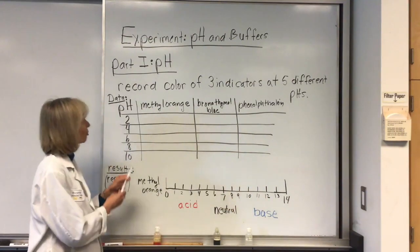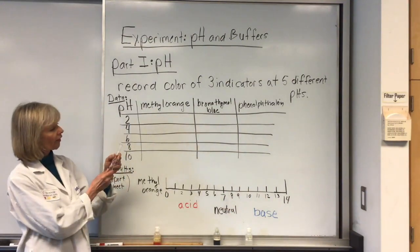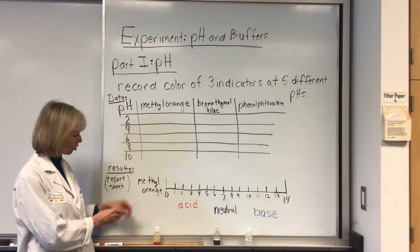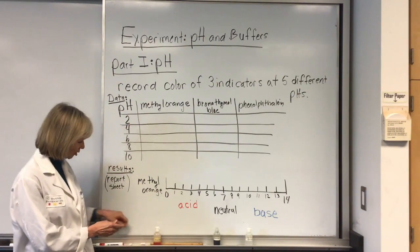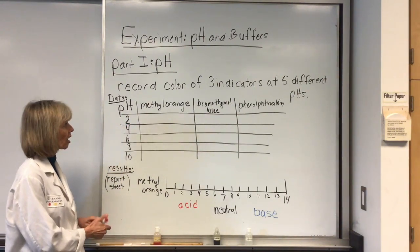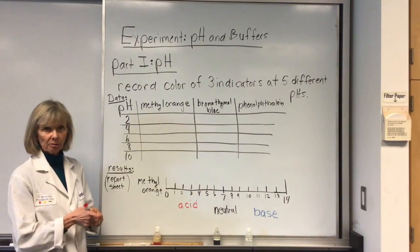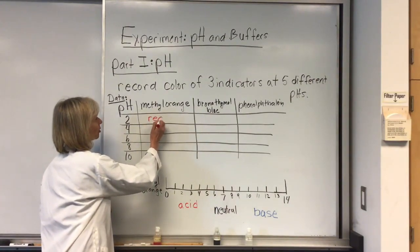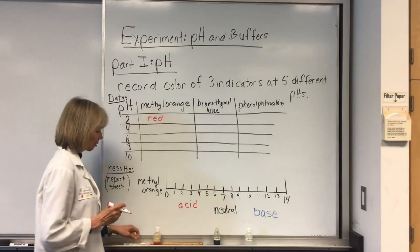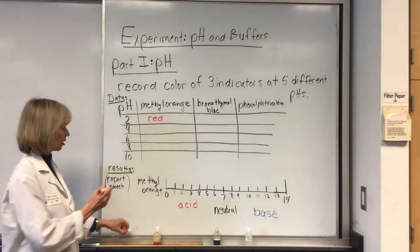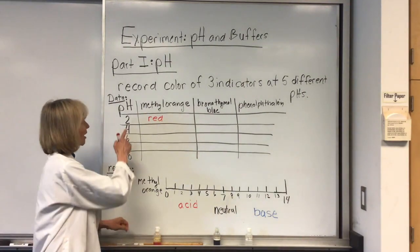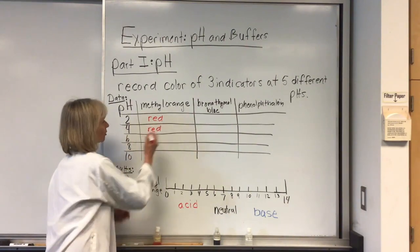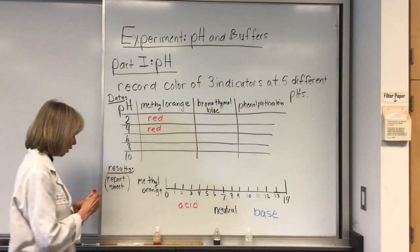In your test tube you'll put in five milliliters of a solution of pH 2, two drops of methyl orange, and you'll record the color it changes. I'm going to make up some data right now and pretend it changes red. I would take a new test tube and test solution with pH 4, and let's say I get red again. I'm recording the color.